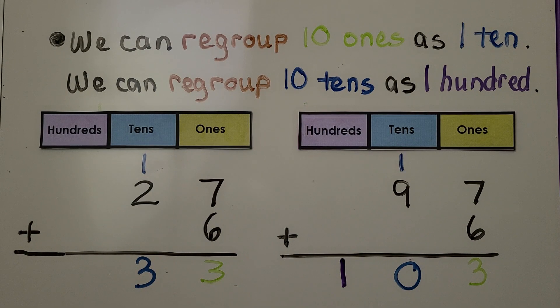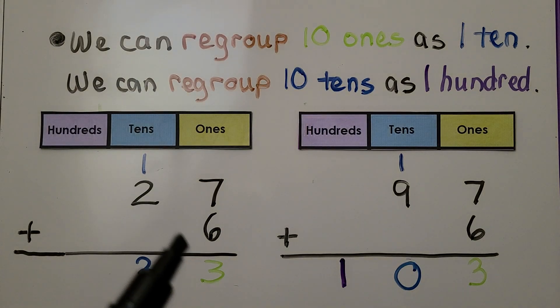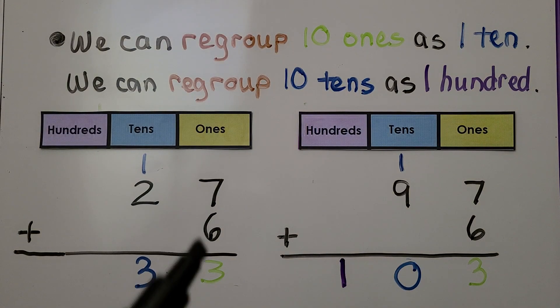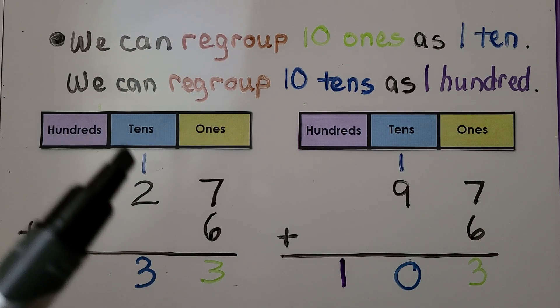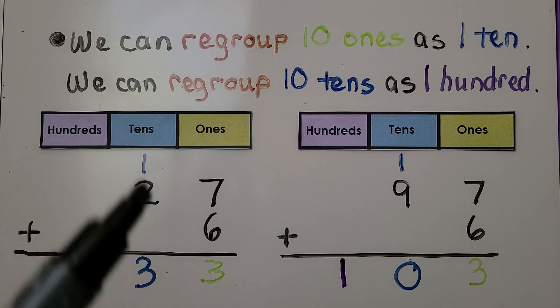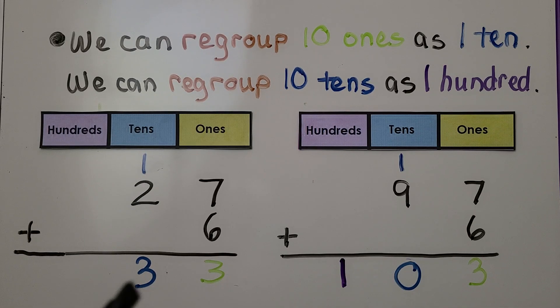We've learned that we can regroup ten ones as one ten. We have 27 + 6. We add 7 + 6 which equals 13. That's one ten, three ones. We regroup the one ten into the tens place. Then we add the tens: 1 + 2 = 3. So 27 + 6 = 33.